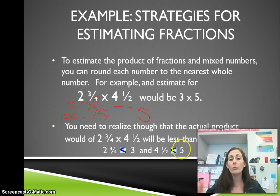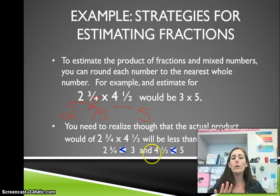So when you take 3 times 5 and you get 15, please know though that your actual answer is going to be less than that. We rounded up on both of those fractions. So that's one way. You can estimate the product of fractions and mixed numbers by rounding to the nearest whole number.